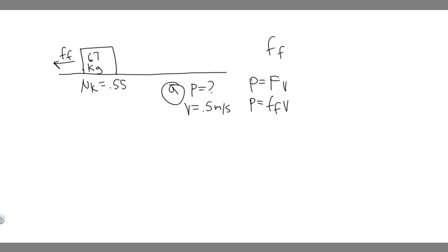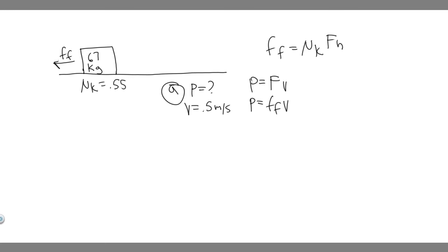The force of friction is equal to mu sub k, or your coefficient of kinetic friction, times the normal force. The normal force in this case is just mg. So the power is going to be equal to mu sub k times mg times the velocity.